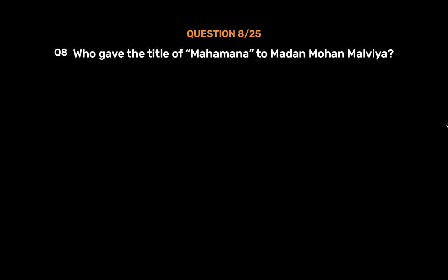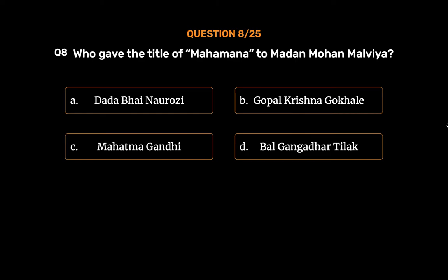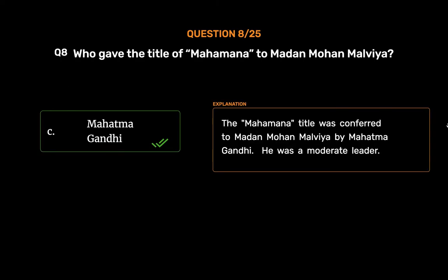Question No. 8. Who gave the title of Mahamana to Madan Mohan Malaviya? Option A. Dada Bhai Naoroji. Option B. Gopal Krishna Gokhale. Option C. Mahatma Gandhi. Option D. Bal Gangadhar Tilak. The correct answer is Option C, Mahatma Gandhi. The Mahamana title was conferred to Madan Mohan Malaviya by Mahatma Gandhi. He was a moderate leader.